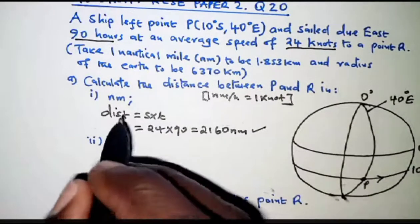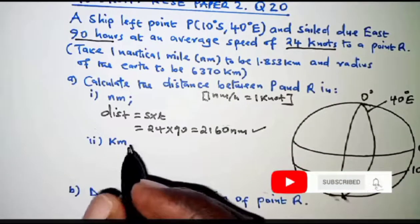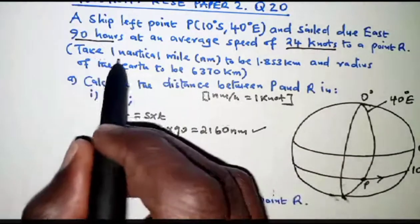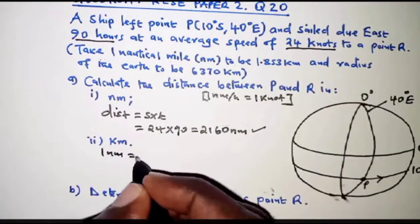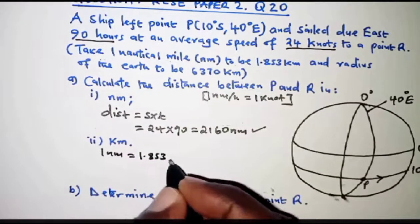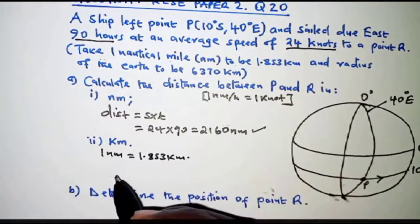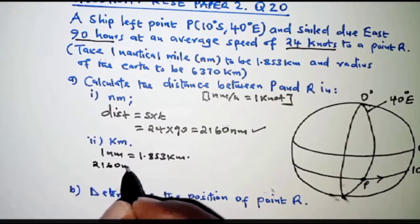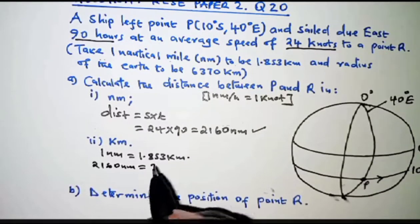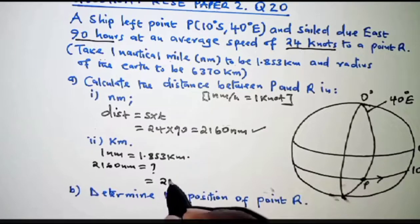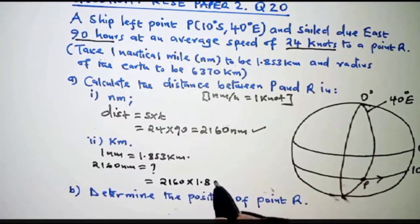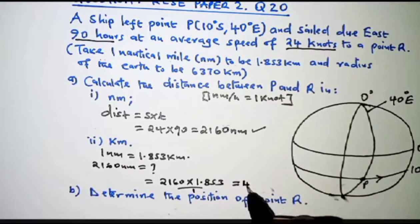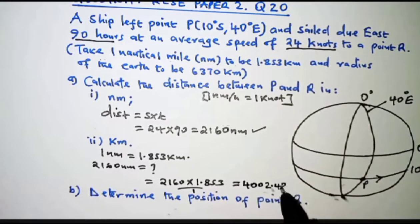For part A roman two, we calculate the same distance in kilometers. We know that one nautical mile is equivalent to 1.853 kilometers. So for 2160 nautical miles, cross-multiplying gives us 2160 times 1.853, which equals 4002.48 kilometers.